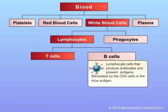The B cells, or B lymphocytes, are cells that produce antibodies. These cells are also among those that can present antigens to the T cells, and they are stimulated by the CD4 lymphocyte population and by viral antigens.